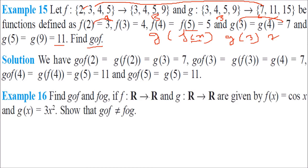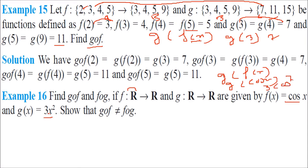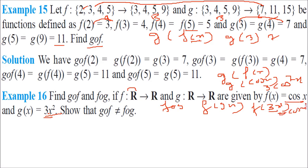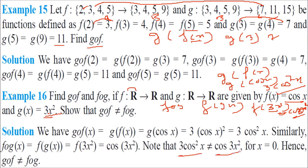Find gof and fog if f: R → R and g: R → R are given by f(x) = cos x and g(x) = 3x². gof(x) = g(f(x)) = g(cos x) = 3cos²x. fog(x) = f(g(x)) = f(3x²) = cos(3x²). These two are not equal, showing that gof ≠ fog in general.